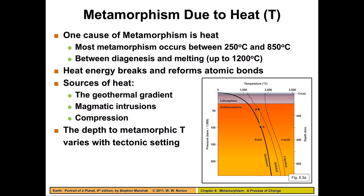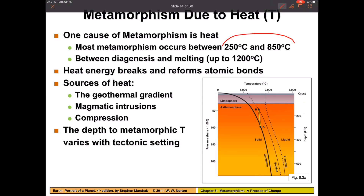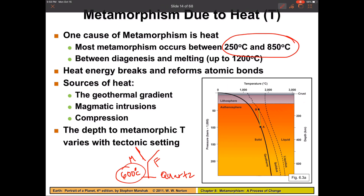One of the causes of metamorphism is heat. Most of our metamorphism is going to happen between 250 and 850 degrees Celsius, which should make sense if we think about Bowen's reaction series. The bottom of Bowen's is quartz, and quartz forms at about 600 degrees Celsius. So if we have a metamorphic rock composed of quartz sand and we metamorphose it — remember, metamorphism happens in the solid state — that means the rock didn't reach above that 600-degree mark. Because if it had, it would have melted and we'd be talking about an igneous rock.